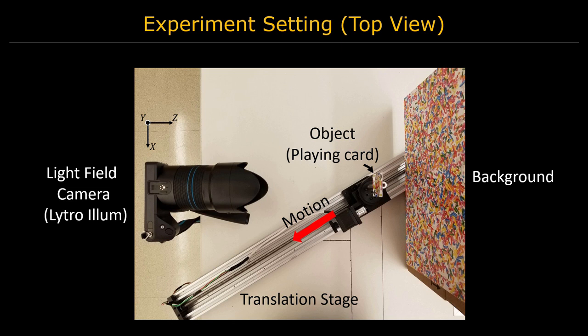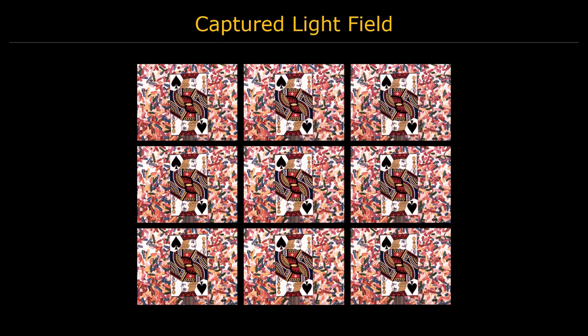The moving object is mounted on a controllable translation stage for ground truth comparisons. We calibrate the Lytro camera and extract the central 9x9 sub-aperture images as input. Here we show a 3x3 subset.